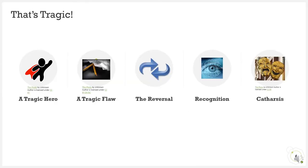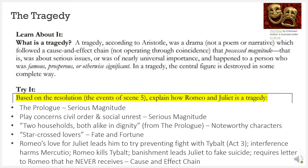You may remember learning about the characteristics of an epic hero. Today we're going to look at a tragic hero, and how these elements coincide with the plot progression of Romeo and Juliet. The next several slides follow the resource located in the Learn About It and Try It. As we go through these slides together, you can fill out your graphic organizer. There are six elements of tragedy. For this lesson, we will focus on the structure and the character.